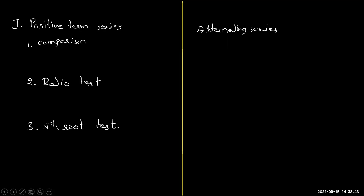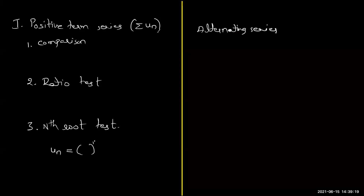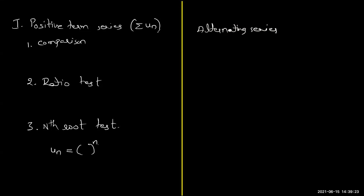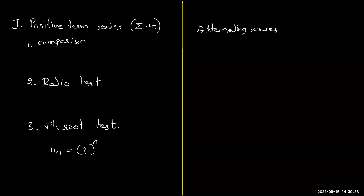Let me recall in which case we use each of these three tests. When you are given a series — summation u_n — after identifying whether it is a positive term series or alternating series, the next step is to identify the nth term. After identifying the nth term, if u_n has an expression of the form 'something whole to the power of n,' then the nth root test is the most suitable.